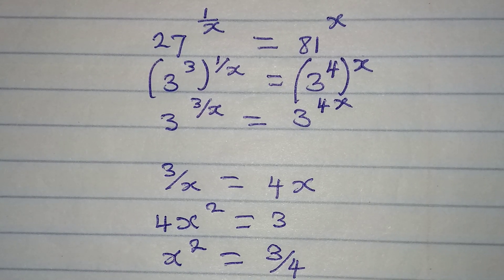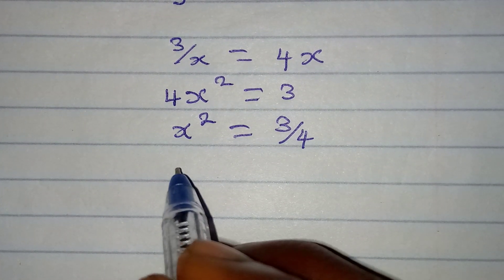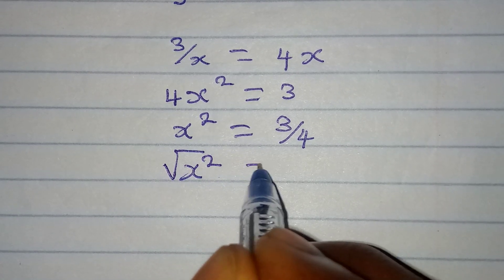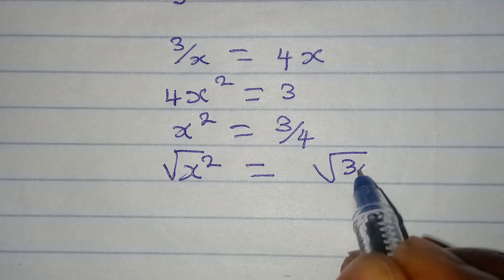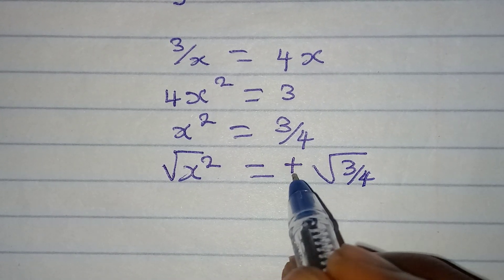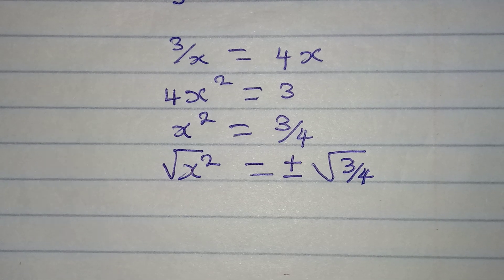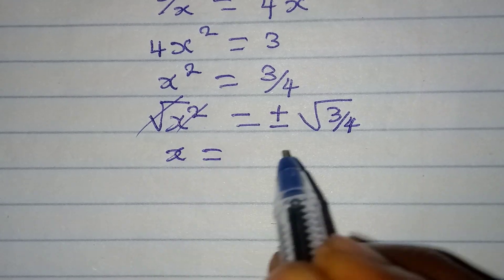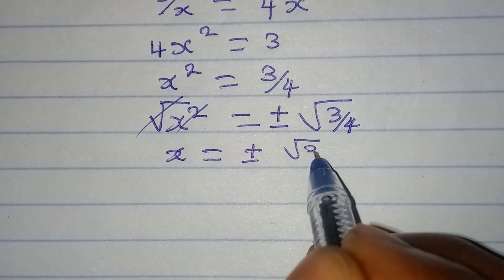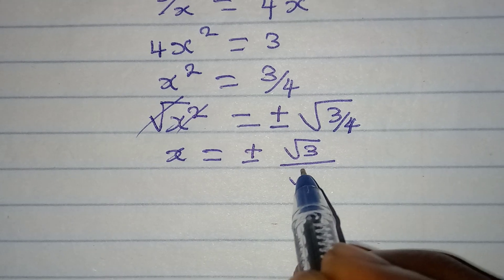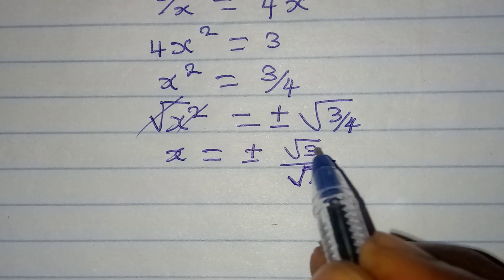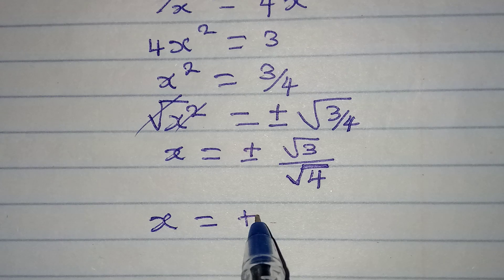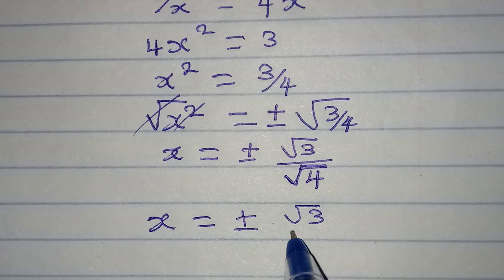We're not looking for x squared, we're looking for x itself. So we take the square root of both sides. Taking the square root of x squared gives x, and taking the square root of 3 over 4 gives a positive or negative result. We can split this as the square root of 3 over the square root of 4, which is plus or minus the square root of 3 over 2.